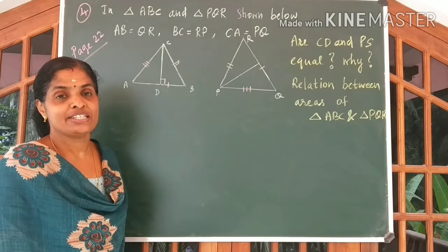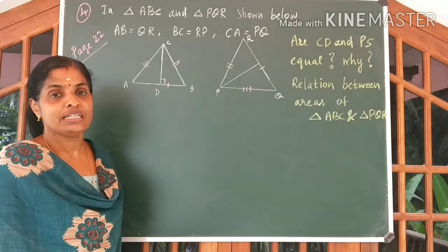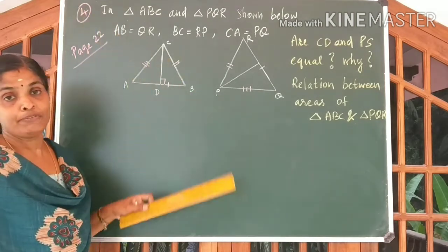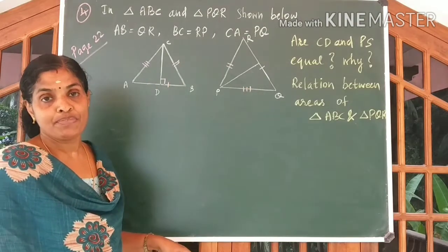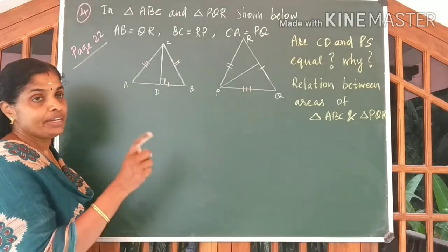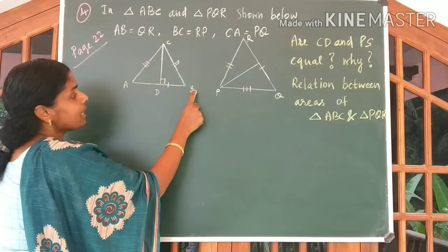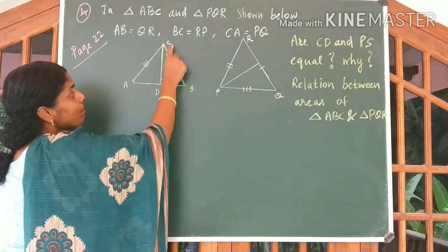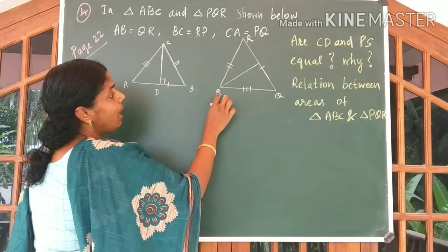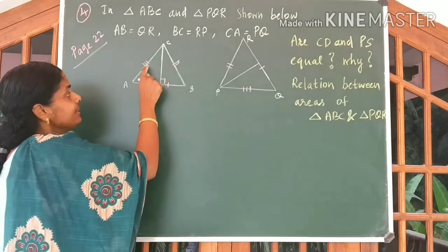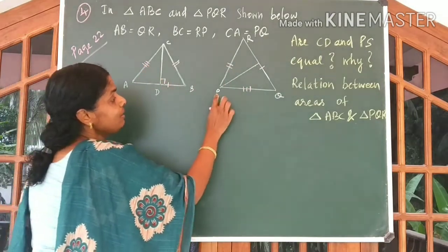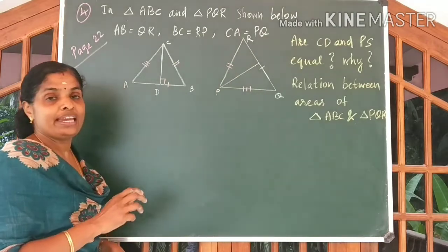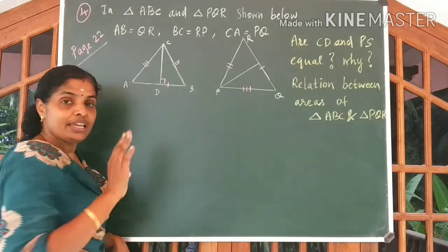Come to the second question, children. This is another doubt shared by a student in the comment box — page number 22, question number 4. You read the question from the textbook. Here, AB is equal to QR — I have drawn a single line. Also, BC and RP are equal — I have drawn two small lines. AC and PQ are equal. So by looking at the given information, you can understand these two triangles are equal triangles.